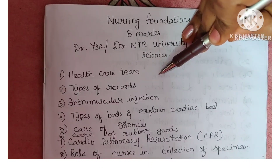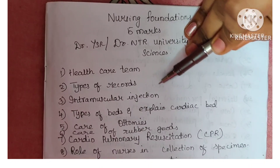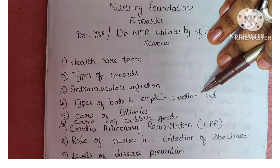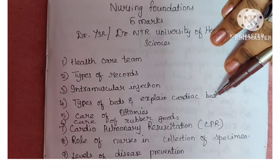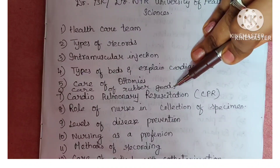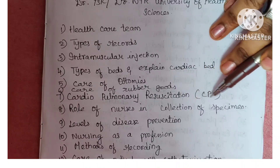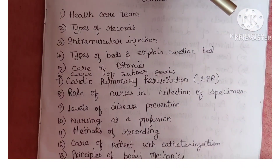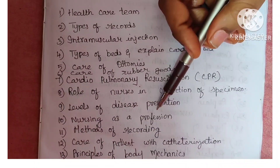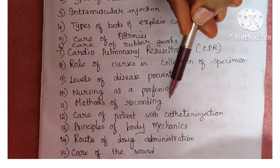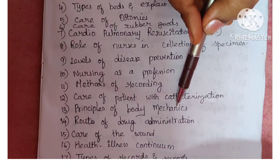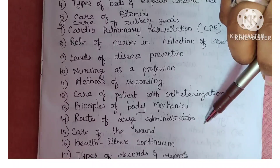The first question is health care team. Next, type of records. Next is intramuscular injection. Next is types of beds and explain cardiac bed. Next is care of ostomies. Next is care of rubber goods. Next is cardiopulmonary resuscitation (CPR). Next is role of a nurse in collection of specimen. Next is levels of disease prevention. Next is nursing as a profession. Next is methods of recording. Next is care of patient with catheterization. Next is principles of body mechanics. Next is routes of drug administration.